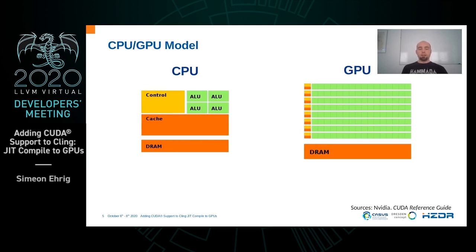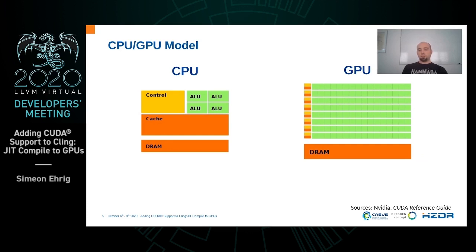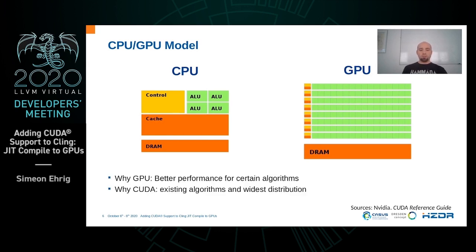Why did we develop the GPU extension? A CPU has a few strong cores and a GPU has many weak cores, but often a GPU has more FLOPS than a CPU. So if your algorithm is well parallelized, you get better performance on a GPU. We wrote a laser wakefield acceleration simulation called PIConGPU which performs really well on GPUs. For NVIDIA GPUs we use the CUDA library. So the two reasons are: GPUs are really fast for our simulation, and the simulation already exists and uses the CUDA library.